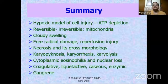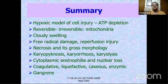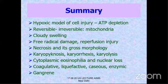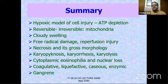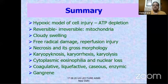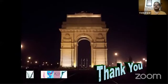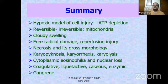In summary: this lecture covered the hypoxic model of cell injury and the importance of ATP depletion, how mitochondria determine reversible versus irreversible injury, cloudy swelling as early reversible injury, free radical damage and reperfusion injury, and what necrosis is — its gross morphology including coagulative (tombstone) necrosis, karyopyknosis, karyorrhexis, and karyolysis, cytoplasmic eosinophilia, and nuclear loss. The types of necrosis covered are coagulative, liquefactive, caseous, enzymic fat necrosis, and gangrene.